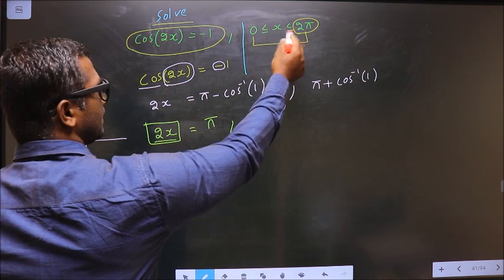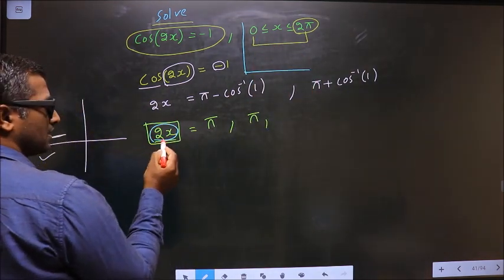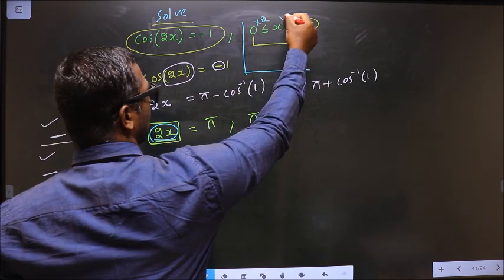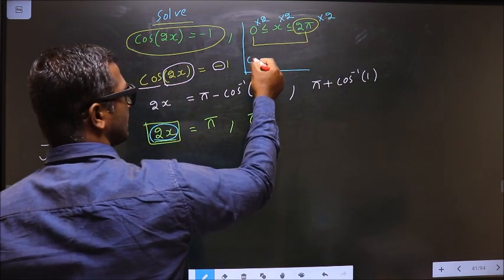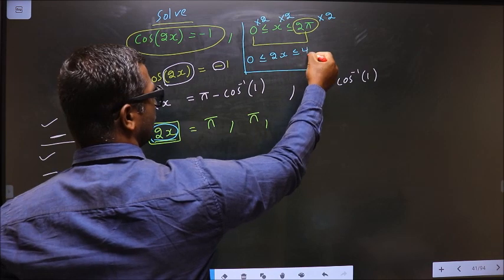Here x lies in this interval. We should get 2x. For that, you multiply by 2. So we get 0 ≤ 2x ≤ 4π.